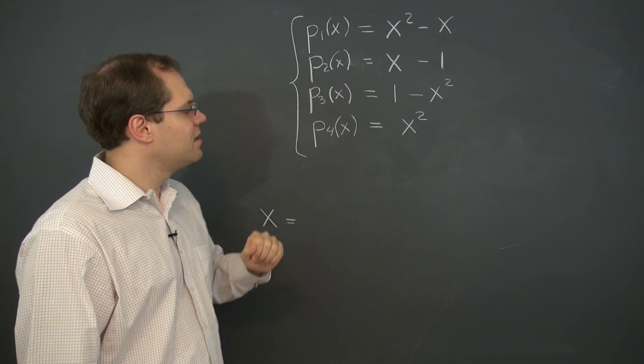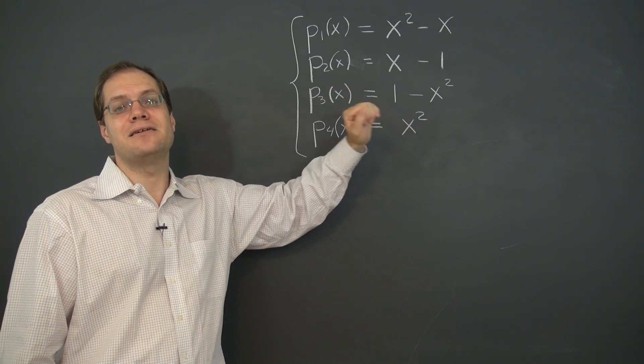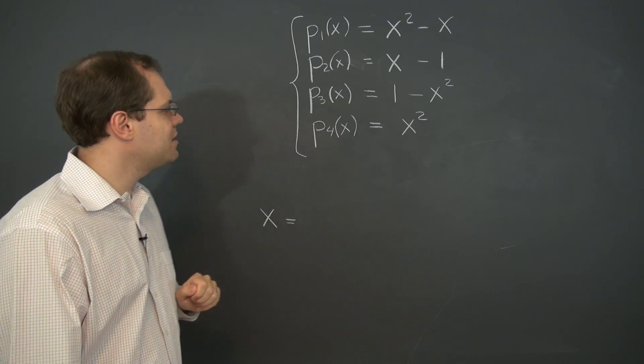I think that in this case, it's easier to go for the second definition of linear dependence, that is to find a non-trivial linear combination that equals zero. Can you see one here?